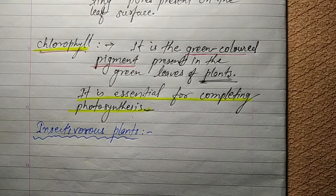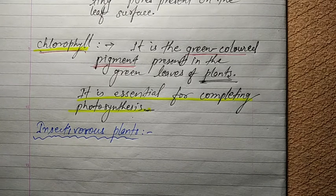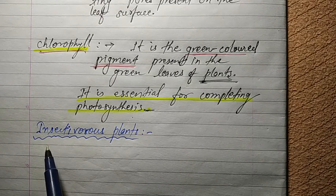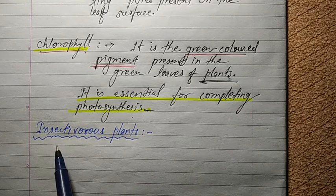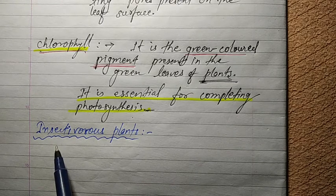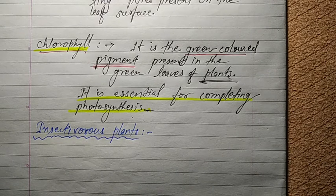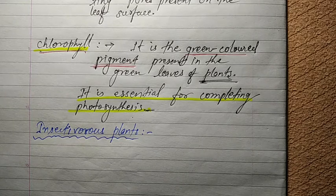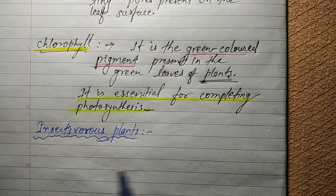Some plants need extra food in addition to what they prepare by photosynthesis. These are the plants that grow in poor soil which lacks nitrogen salts. They get the extra enrichment from insects, and they are called insectivorous plants.